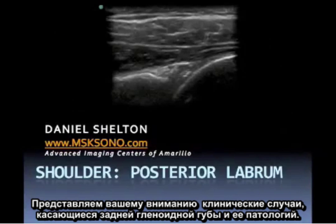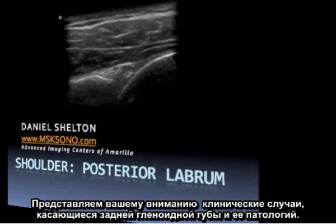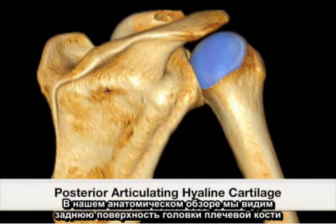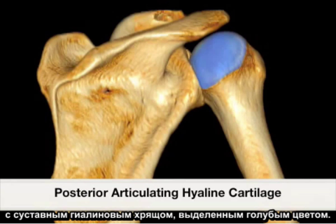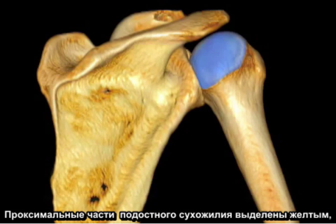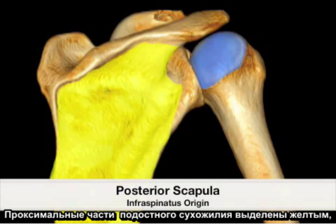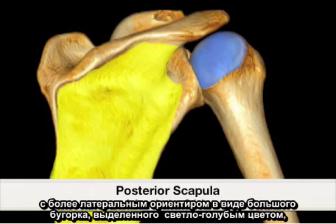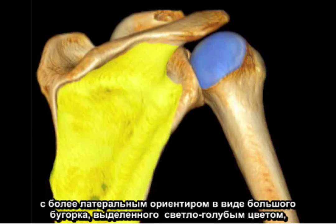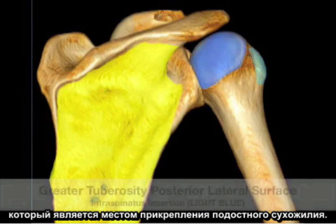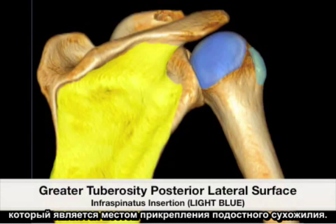The following are case studies presenting pictures of the posterior glenoid labrum and its abnormalities. In our anatomical review, we have the posterior surface of the humeral head with articular hyaline cartilage in blue, and the proximal origin of the infraspinatus tendon in yellow, with the greater tuberosity highlighted in light blue, which serves as the insertion of the infraspinatus tendon.